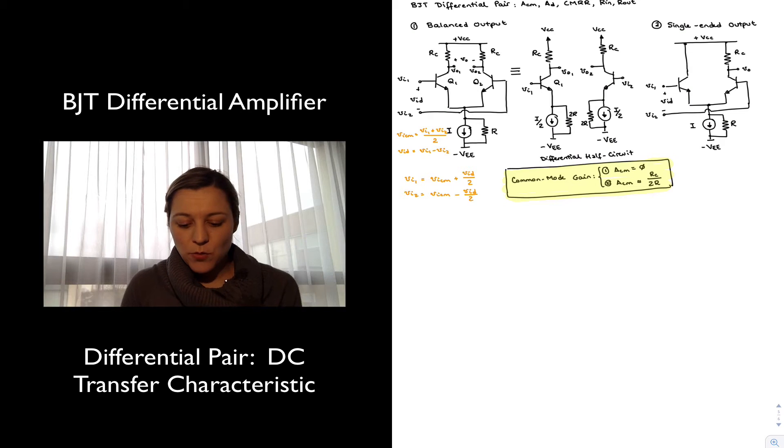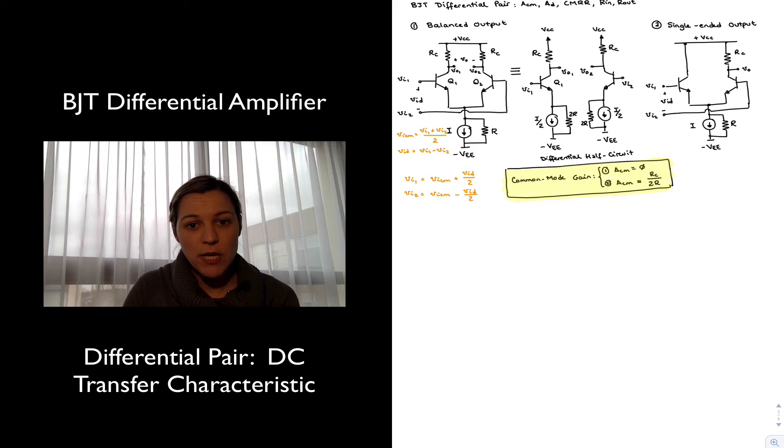Hello. So we have just taken a look at the BJT differential pair and we came up with expressions for the common mode gain for both the case where we had a balanced output as well as a single-ended output. And so I've noted those here.